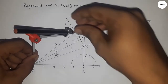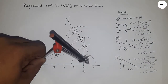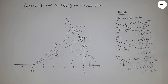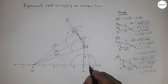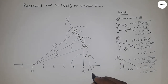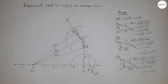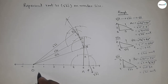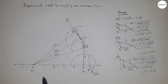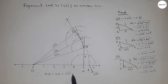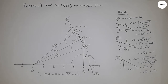Now take the length OD by compass and draw an arc which meets the number line at point P. This is the representation of root 31 on the number line. Therefore, distances OD and OP are equal, both equal to root 31 units. That's all — thanks for watching, please subscribe, like, and comment on my video.